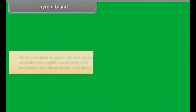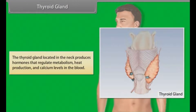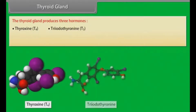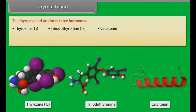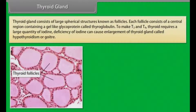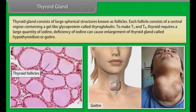The thyroid gland, located in the neck, produces hormones that regulate metabolism, heat production and calcium levels in the blood. The thyroid gland produces three hormones: thyroxine (T4), triiodothyronine (T3), and calcitonin. T3 and T4 are involved in controlling metabolism and heat production, while calcitonin helps regulate blood calcium levels. The thyroid gland consists of large spherical structures known as follicles, each containing a gel-like glycoprotein called thyroglobulin. To make T3 and T4, the thyroid requires a large quantity of iodine.